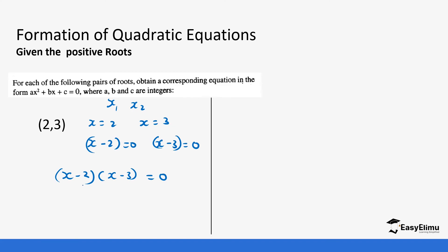We are going back. We will use this expression to expand, so this becomes x into bracket (x minus 3), and then minus 2 into bracket (x minus 3), equals 0.